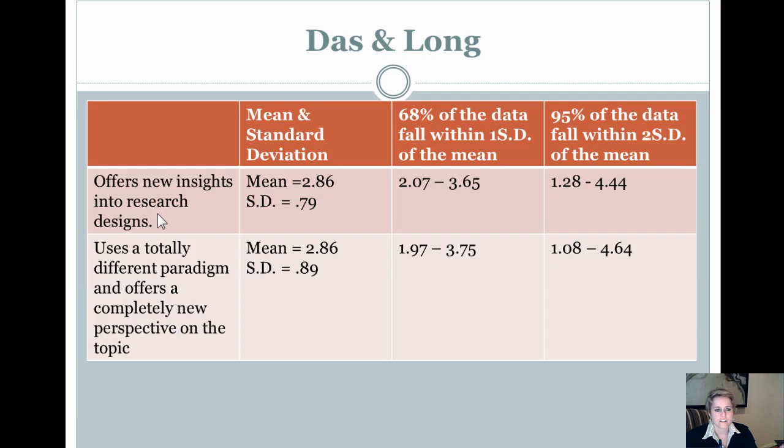So over here from the Dawson-Long article, here are two of the attributes. Both, you'll notice, here's the mean and standard deviation. They both have the same mean, both have the same mean, but one has a slightly wider standard deviation, which means uses a totally different paradigm with slightly more variable in terms of people's responses. So once we take what we did before, there are 68% of the data and 95% of the data falling within one and two standard deviations, you can see how this starts to play out.